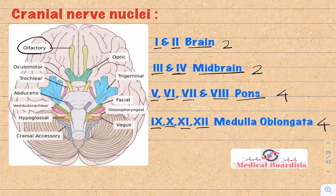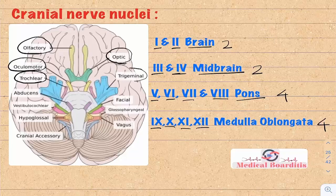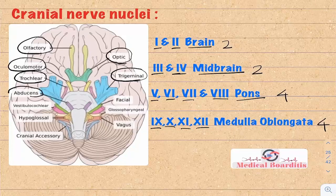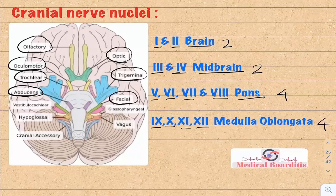Cranial nerve 1 is the olfactory nerve, responsible for smell. Cranial nerve 2 is the optic nerve, responsible for vision. Cranial nerve 3, the oculomotor nerve, supplies most extraocular muscles except the lateral rectus and superior oblique. Cranial nerve 4, the trochlear nerve, supplies the superior oblique muscle. Cranial nerve 5, the trigeminal nerve, is responsible for sensation of the face, general sensation of the anterior two-thirds of the tongue, and motor innervation to the muscles of mastication. Cranial nerve 6, the abducens nerve, supplies the lateral rectus muscle responsible for abduction of the eye. Cranial nerve 7, the facial nerve, supplies muscles of facial expression, taste from the anterior two-thirds of the tongue, controls the stapedius muscle, and also supplies lacrimation and salivation through the submandibular and sublingual salivary glands.